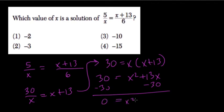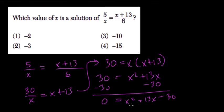0 equals x squared plus 13x minus 30. So what factors multiply to negative 30 and add to positive 13?